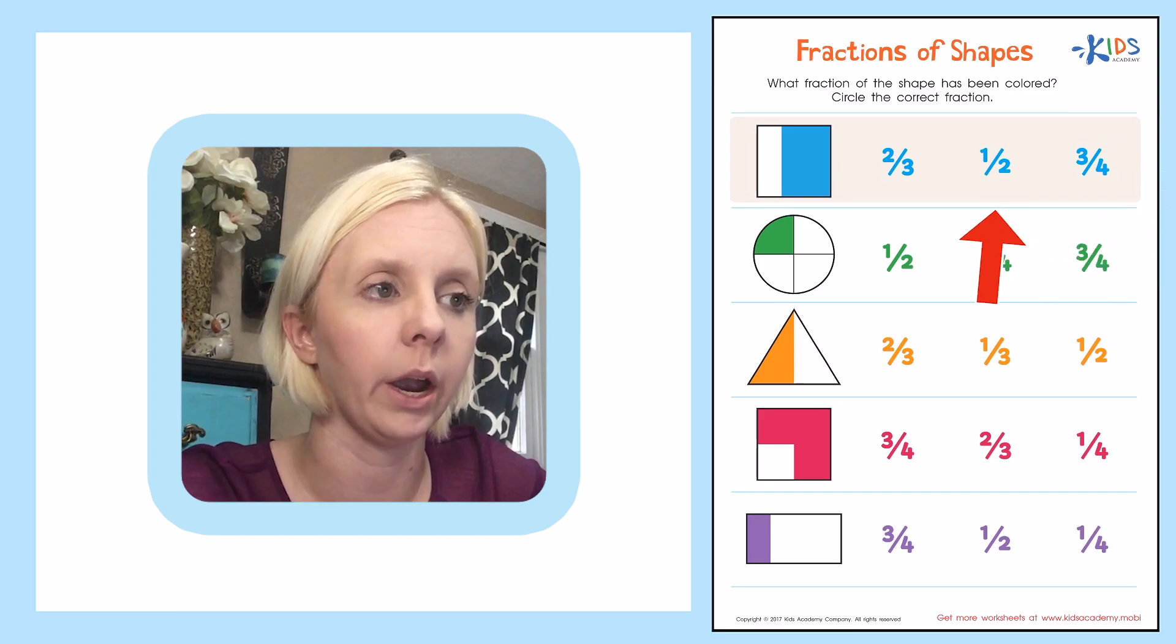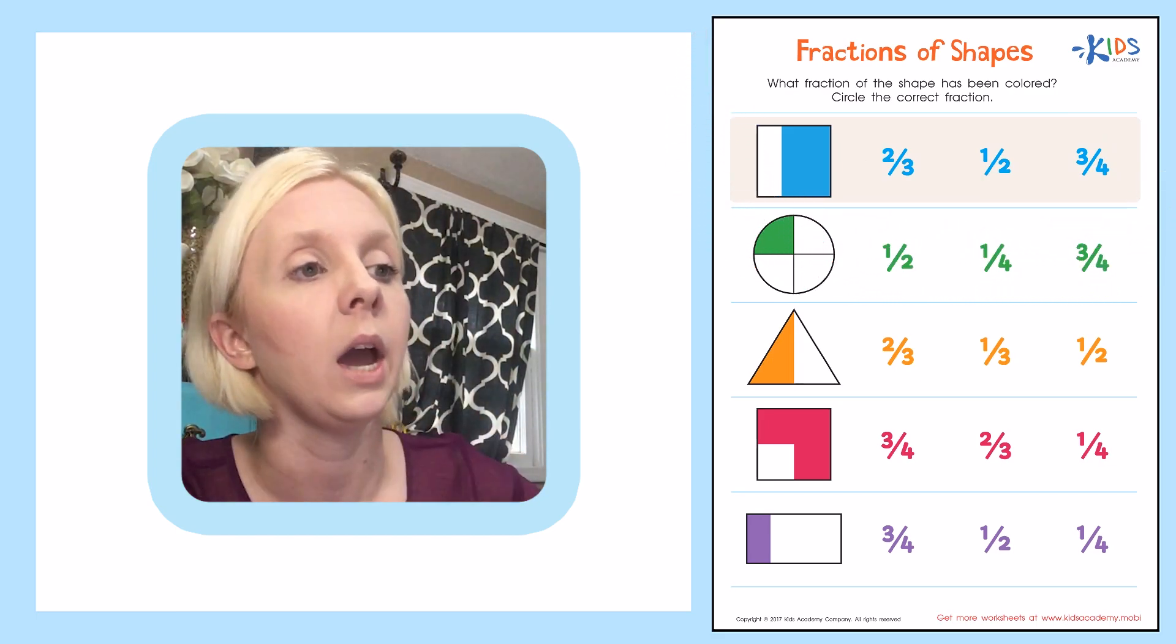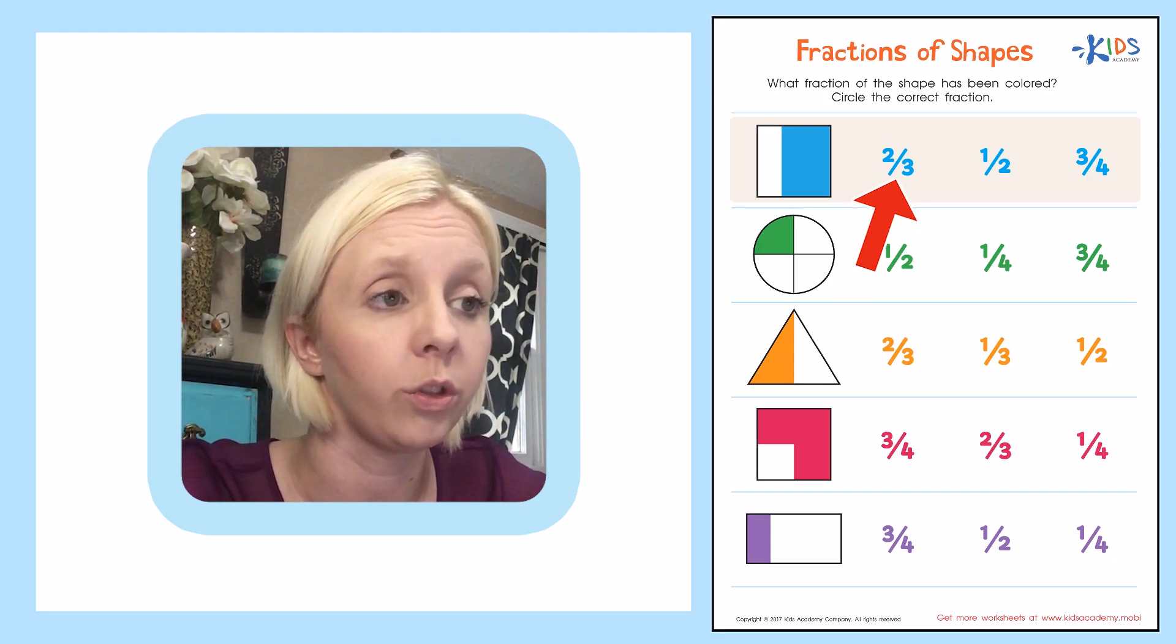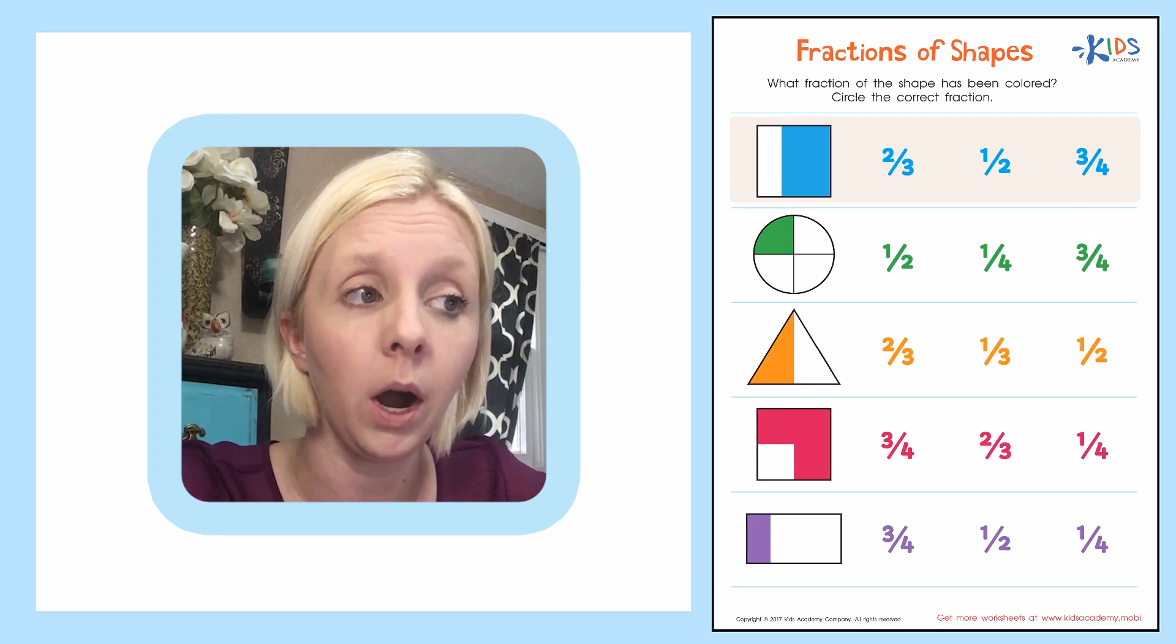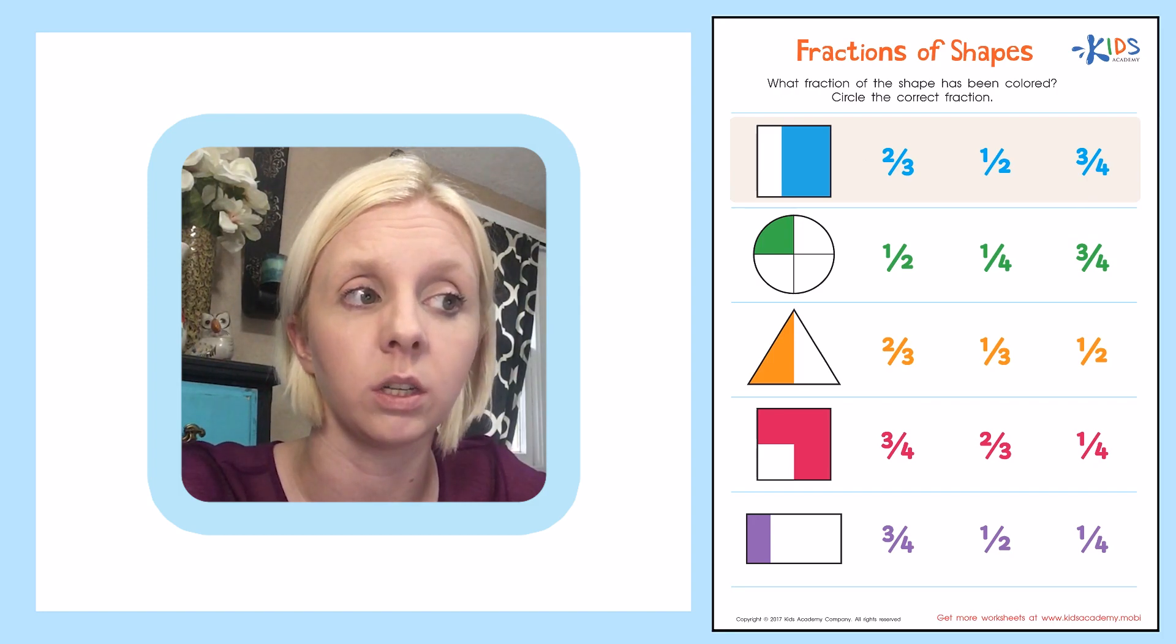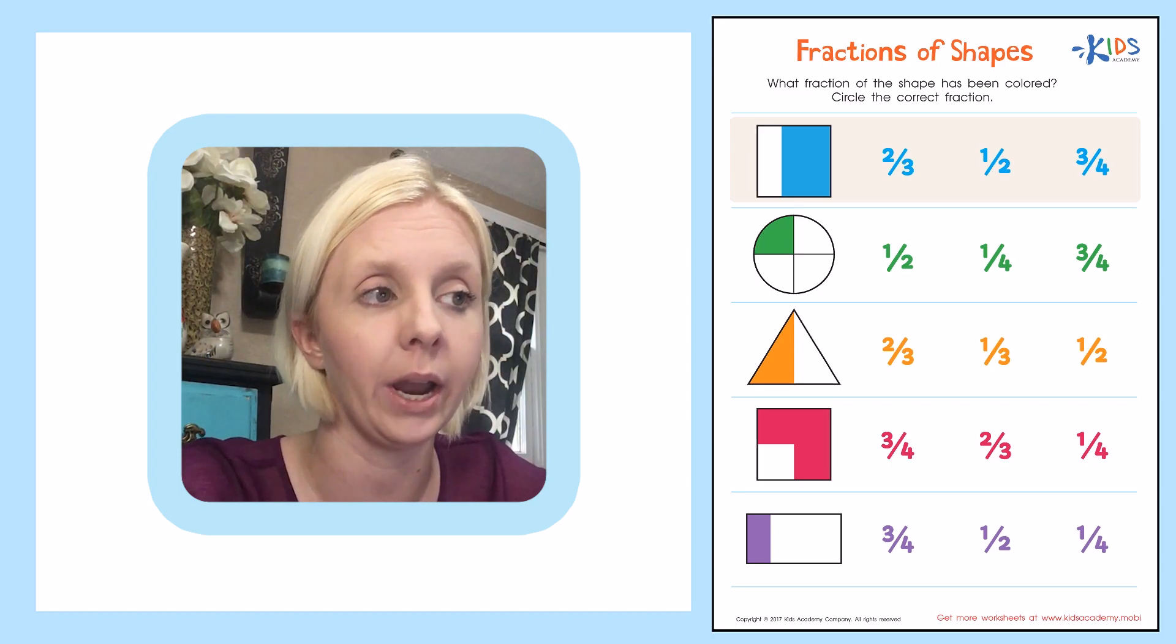So let's come over here and look at our different options. We've got a square to start with and we've got three choices. We have two thirds, one half, or three fourths. Now the bottom number of a fraction tells us how many equal parts the shape is divided into.